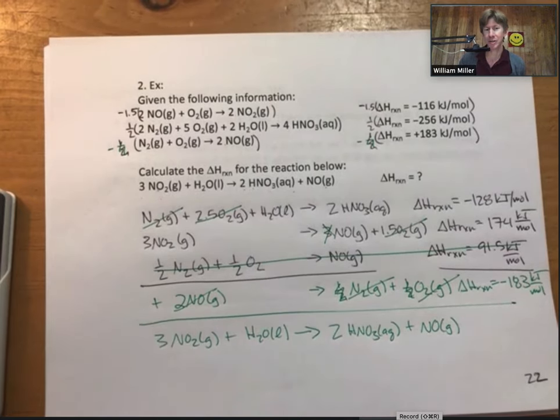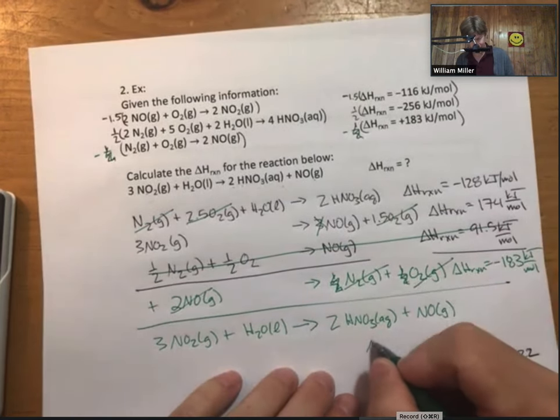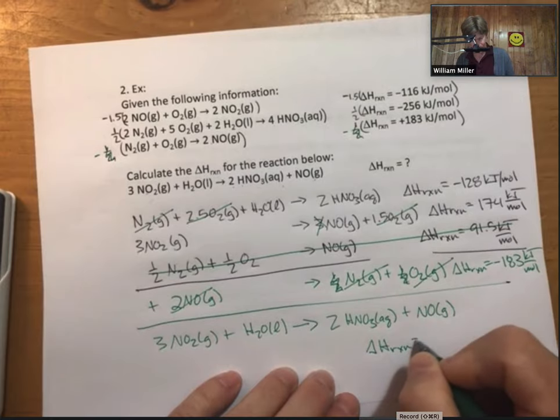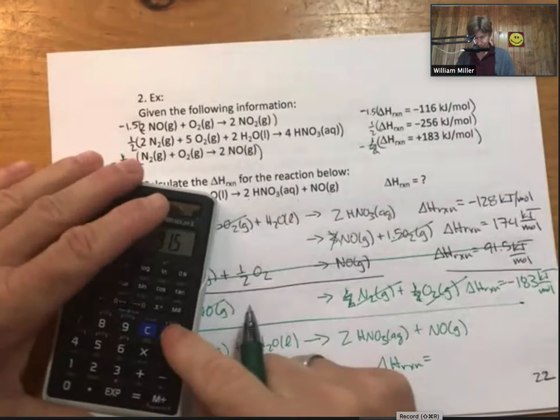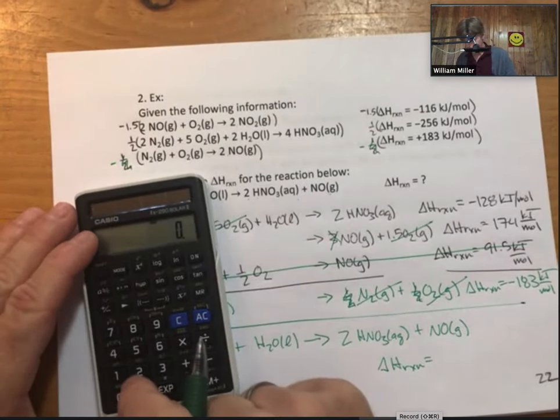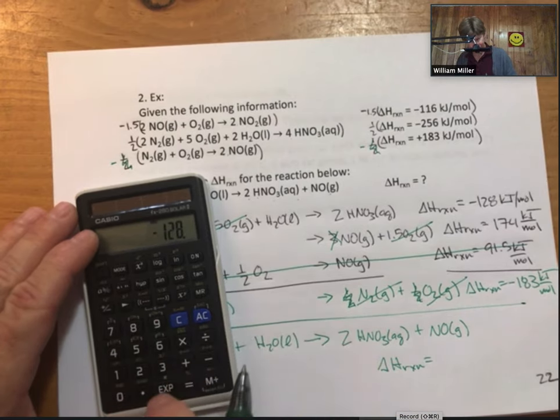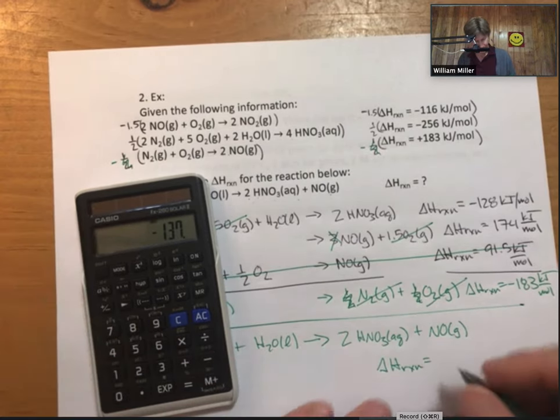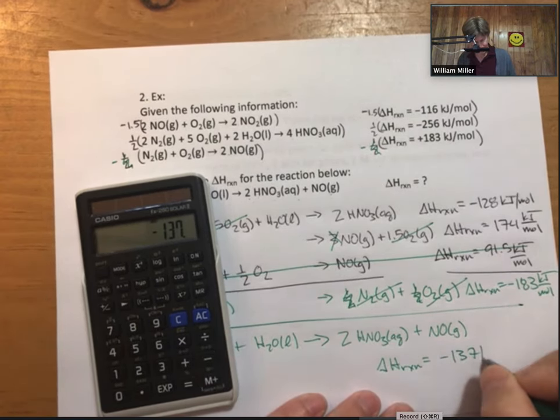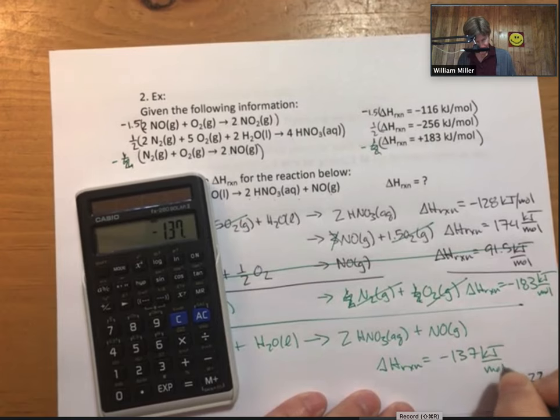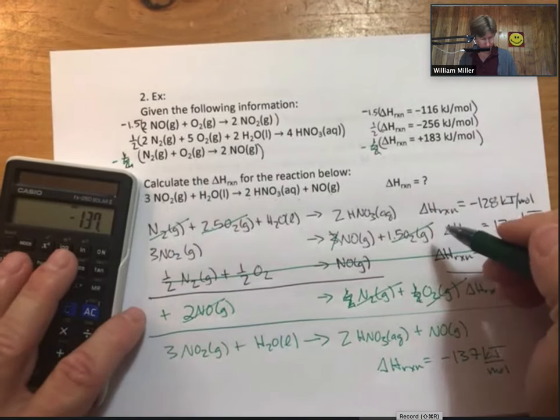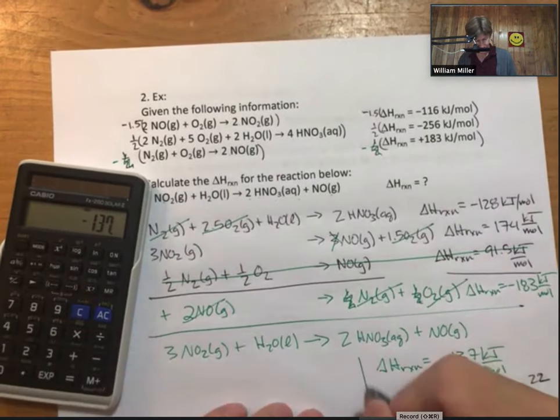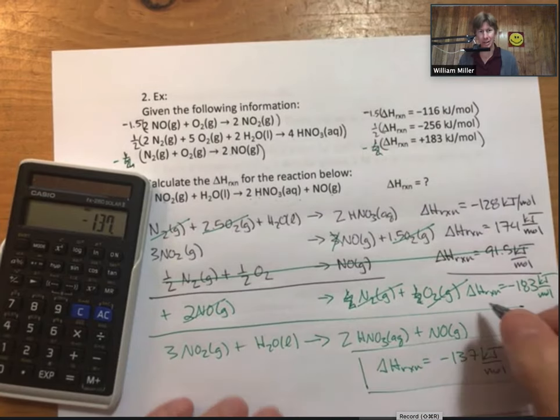A hard reaction to do, a somewhat hard reaction to solve for, and now my delta H for this final is going to be minus 128 plus 174 minus 183 is minus 137 kilojoules per mole, and that looks right.